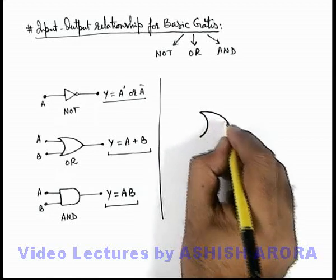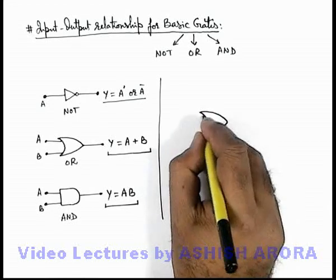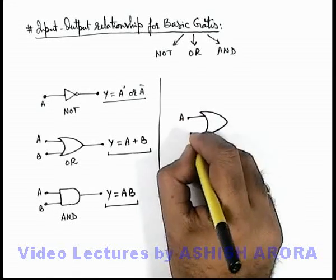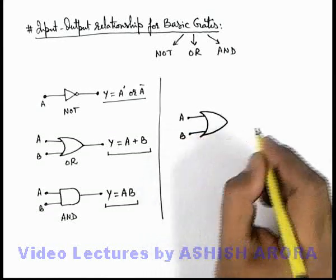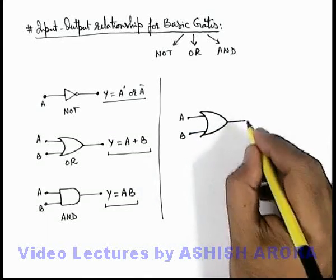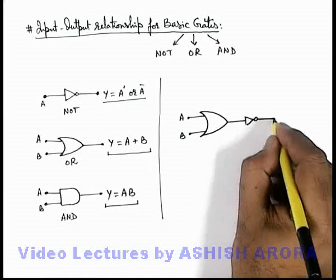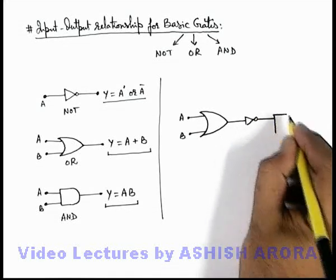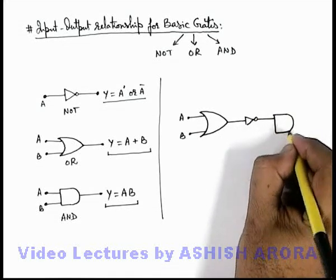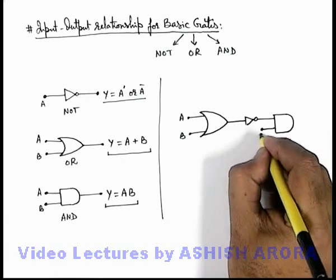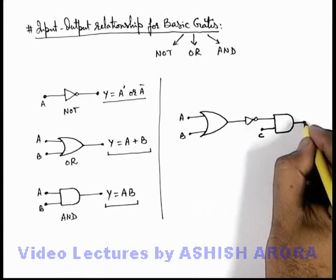Say if we consider different gates in various combinations, like if we are given with an OR gate and if there are two input terminals A and B, and the output of this OR gate is connected to a NOT gate, which is supplied to an AND gate, and there is another input C applied to this AND gate and there is an output.